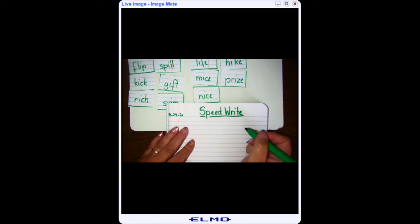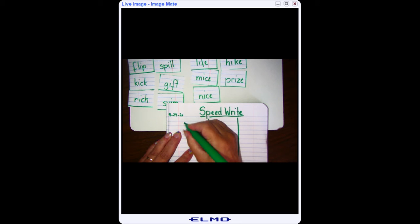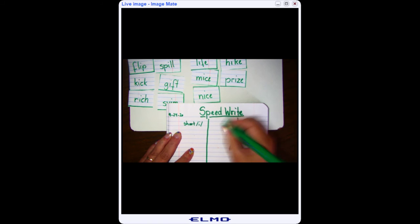I then need to set up my page before we get started. I know that I have three categories so I make my three columns. And I write my categories. I have the short I sound. I have the long I sound. And I have my oddball. Then I draw a line underneath it so I know that's my header.